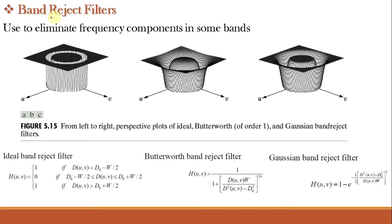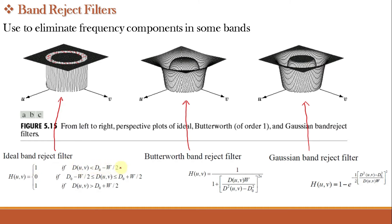Band reject filters are used to eliminate frequency components in specific bands. As seen in the figure, the ideal band reject filter rejects a particular band and passes all other frequencies. Its transfer function H(u,v) equals 1 if D(u,v) is less than D0 minus W/2 or greater than D0 plus W/2, and equals 0 if D(u,v) falls between D0 minus W/2 and D0 plus W/2 — meaning it rejects that band.